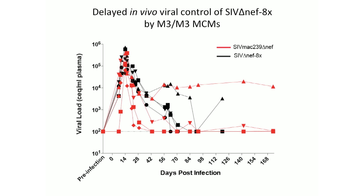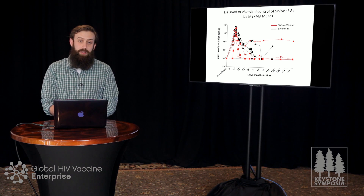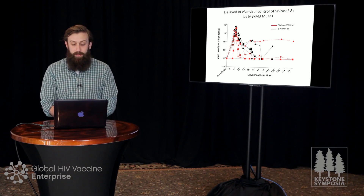Once we determined that the mutations in the 8X virus didn't have an in vitro fitness cost, we decided to evaluate our virus in vivo by infecting MCMs. As you can see in this graph in black, a group of four MCMs infected with our 8X virus showed delayed in vivo viral control compared to four MHC-identical animals infected with wild-type Delta-NF, shown in red. Currently, we are continuing to follow viral loads in these animals to see if we observe any rebound over time.